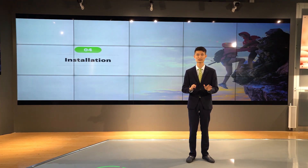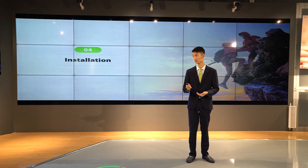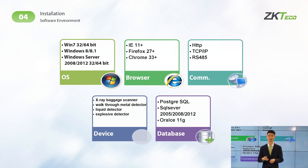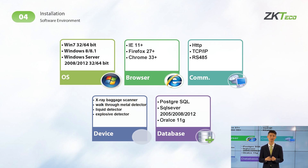After watching the video, I would like to introduce the installation environment for the software. For the operating system, J.K. Fire SIS supports Windows 7, Windows 8, and Windows Server 2008 and 2012, in 32 or 64 bit. For the browser, it supports IE, Firefox, or Chrome. For communication protocols, there is HTTP, TCP/IP, and RS-485. For connected devices, it supports walkthrough metal detector, baggage scanner, liquid detector, explosive detector, and under-vehicle scanner.